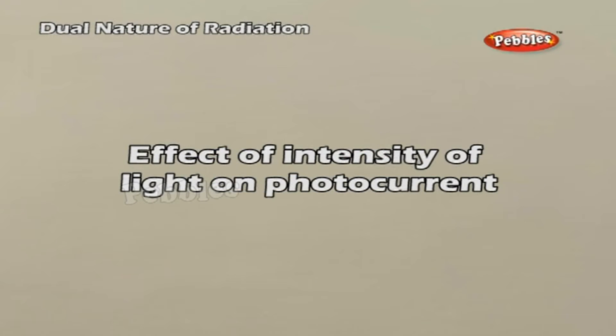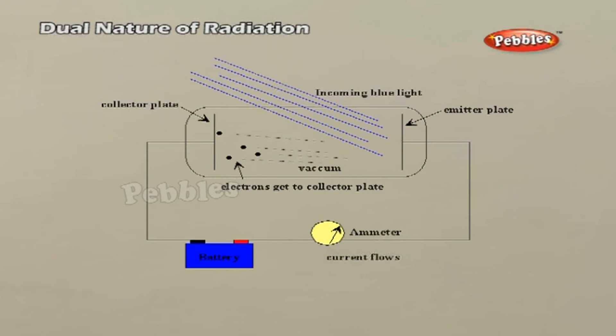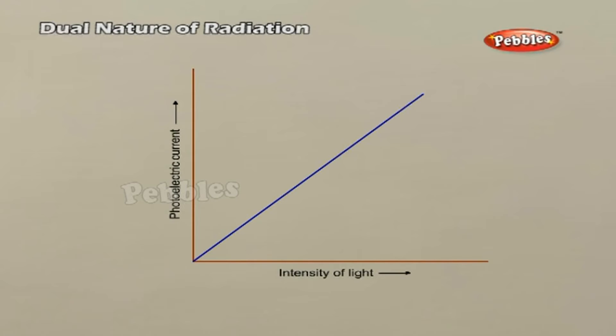Effect of intensity of light on photocurrent. The collector A is maintained at a positive potential with respect to emitter C, so that the electrons emitted from C are attracted towards the collector. Keeping the intensity of the incident radiation and the accelerating potential fixed, the intensity of light is varied and the resulting current is measured each time. It is observed that the photocurrent increases linearly with intensity of incident light as shown in the graph. This implies that the number of photoelectrons emitted per second is directly proportional to the intensity of the incident radiation.